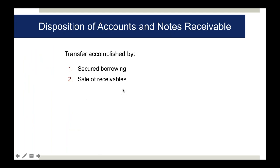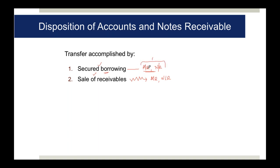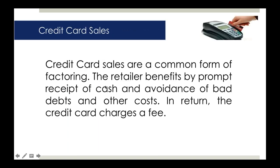Transfer of receivables can be accomplished by secured borrowing or outright sale of receivables. Secured borrowing means you give accounts receivable or notes receivable as collateral and borrow money against them. An outright sale means you actually sell the receivables to the third party completely - that is a true sale, not just using them as collateral.